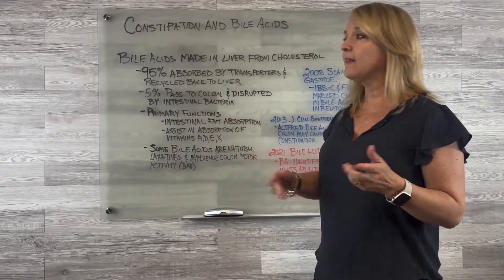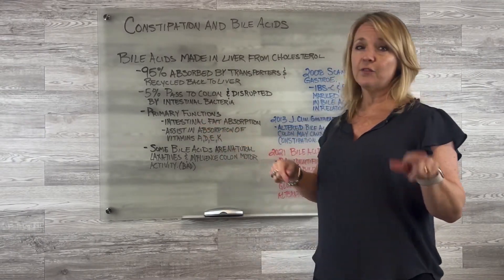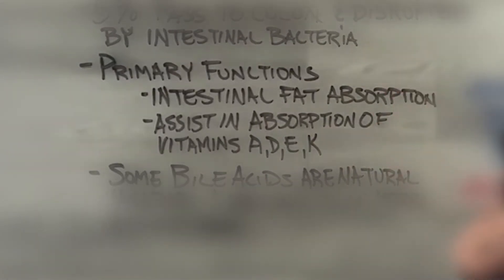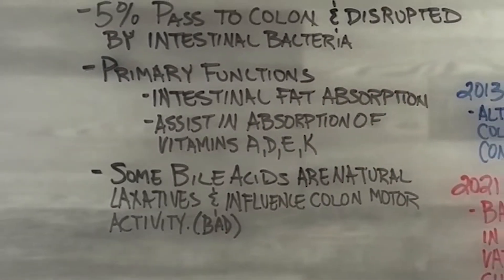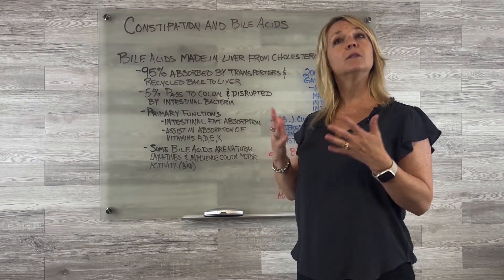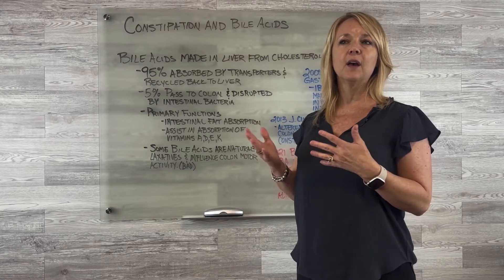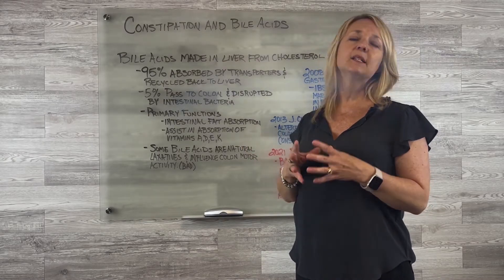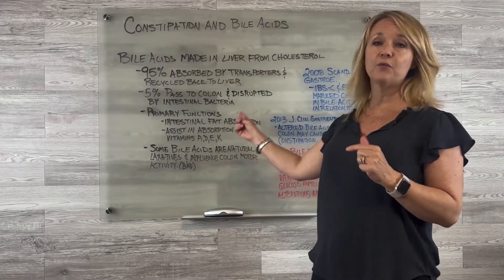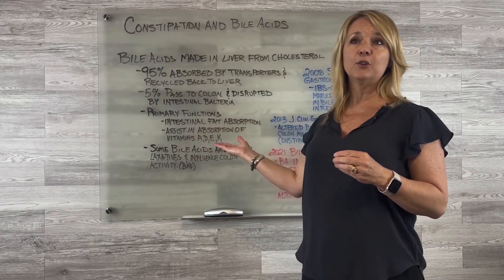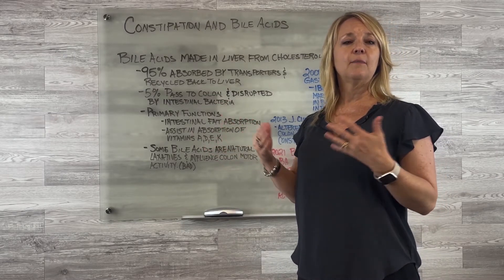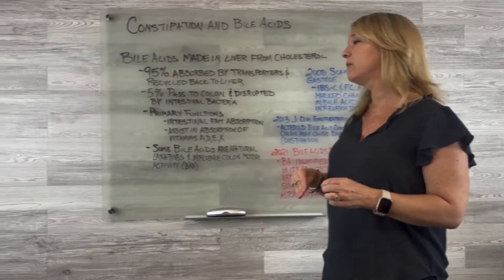The primary functions of bile acids are intestinal fat absorption and assisting in the absorption of vitamins A, D, E, and K. These are especially important after bariatric surgery, when we are disrupting or altering — with the Roux-en-Y gastric bypass — the absorption of vitamins and minerals. Adding bile acid alterations into that picture could be a really significant negative for those fat-soluble vitamins.